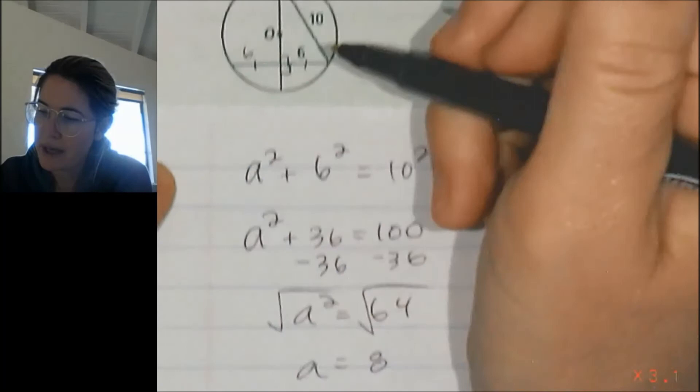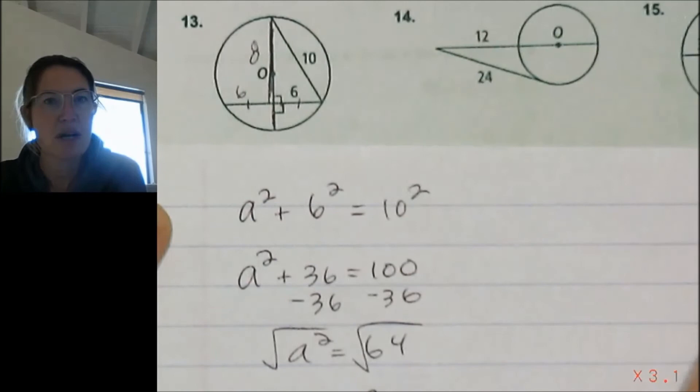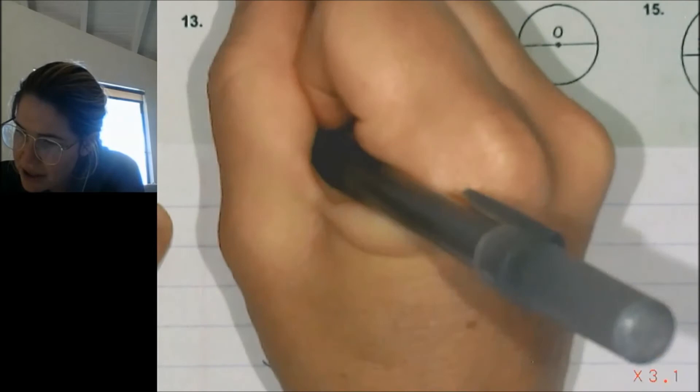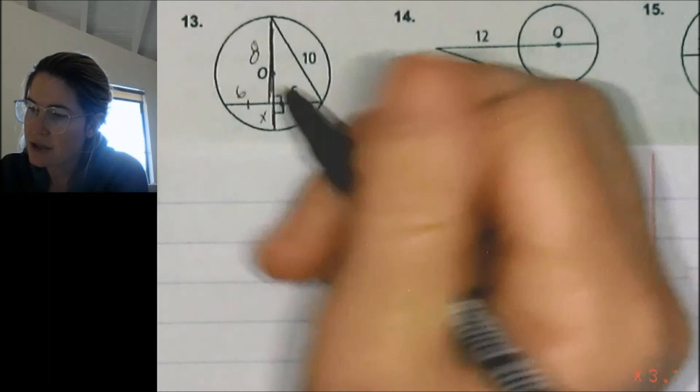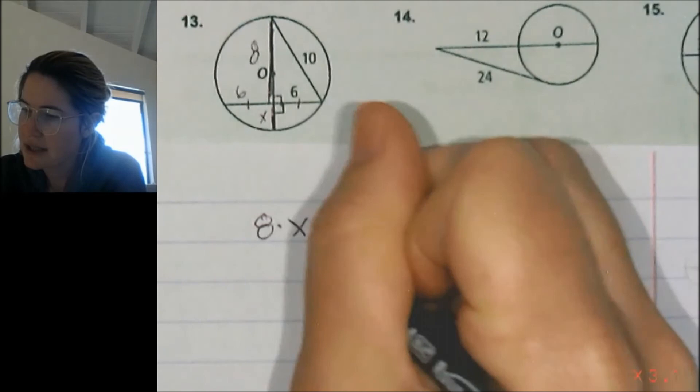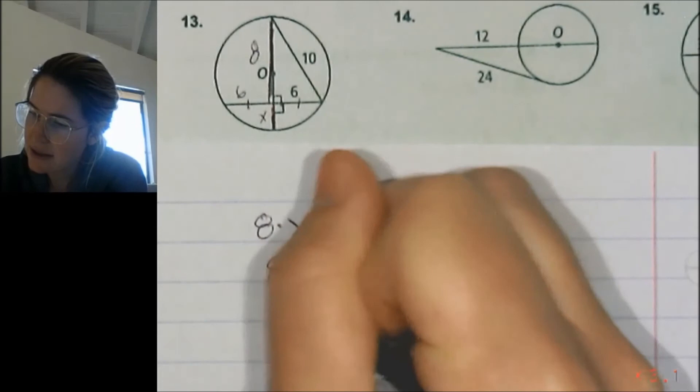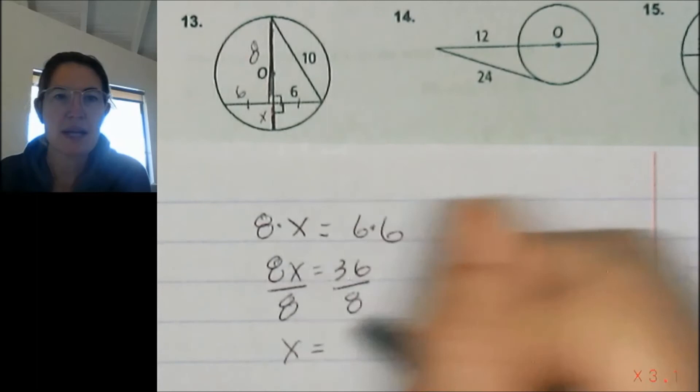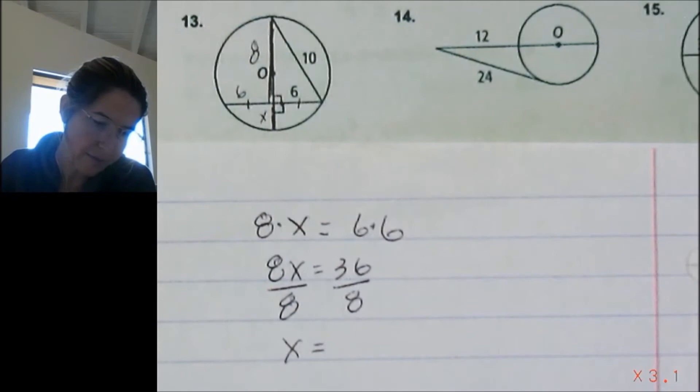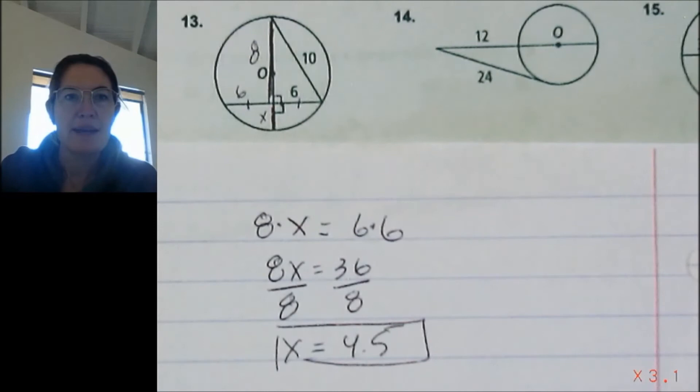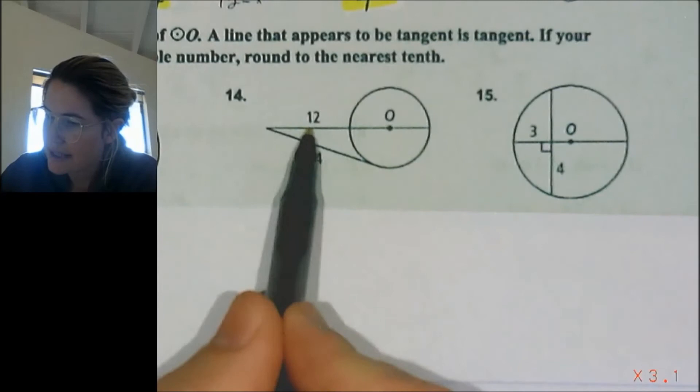So that means this whole big length right here is 8. But it doesn't tell me this little chunk and I need that little chunk so I can figure out what the whole diameter is. So I'm going to call the little chunk x. So I'm just going to do 8 times x, this chunk times this chunk is equal to 6 times 6. So 8x equals 36. Divide by 8 on both sides. 36 divided by 8 is 4.5. And that's it.